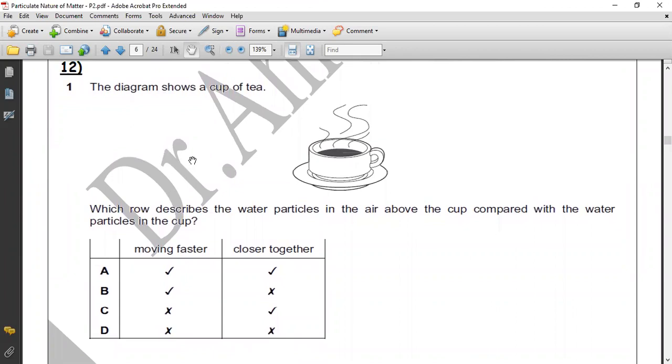Question 12. The diagram shows a cup of tea. Which describes the water particles in the air above the cup, right here, compared to the water particles in the cup itself? At the beginning, let's say that water particles above is water vapor, liquid water down and water vapor up. Water vapor gas, gas phase, gas state. So particles of gas move faster - yes, move faster, but not close together, they are move faster but not close together. So the correct answer will be B.